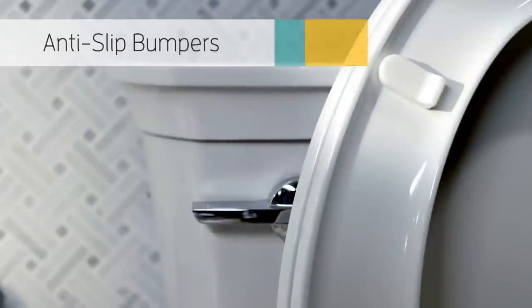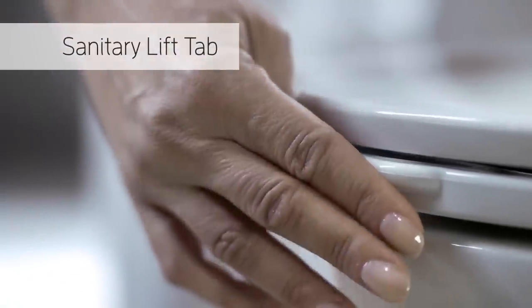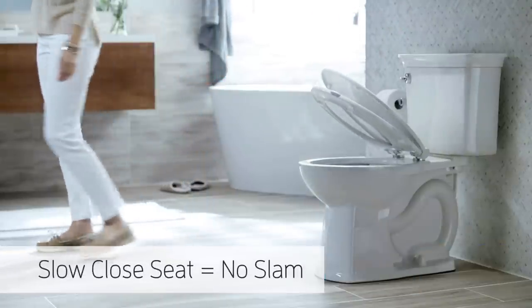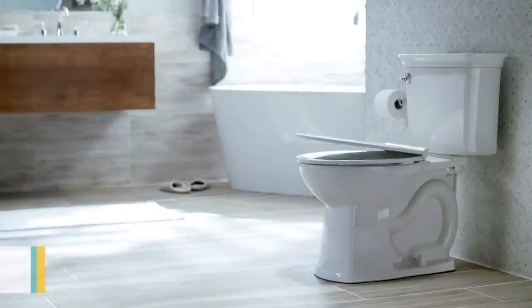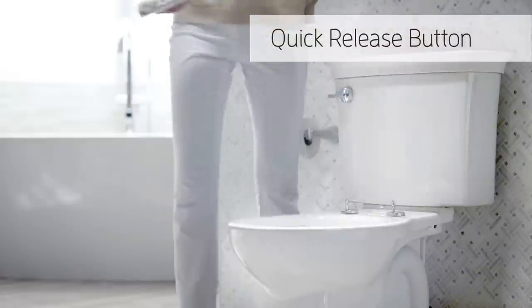The seat features anti-slip bumpers that hold the seat tightly in place. A sanitary lift tab is provided for lifting the seat, while the slow-close seat means quiet and easy operation. There's even a quick release button to remove the seat for quick and easy cleaning.